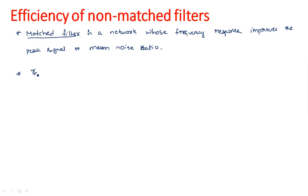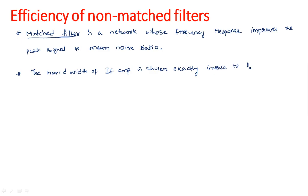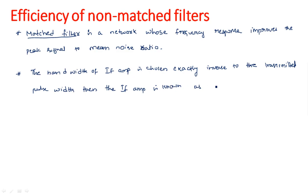If the bandwidth of the IF amplifier is chosen to be exactly the inverse of the transmitted pulse width, then that IF amplifier is known as a matched filter.